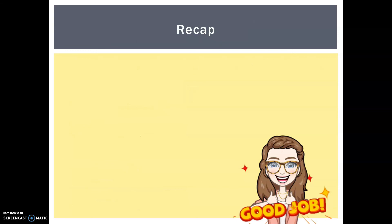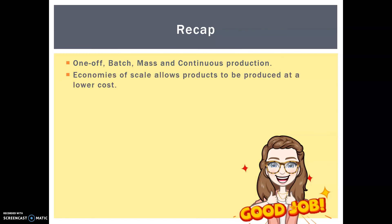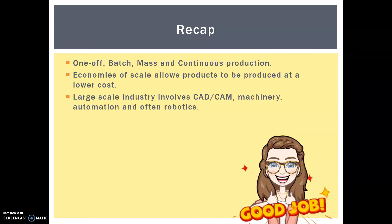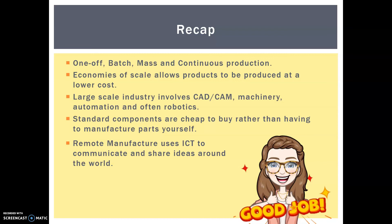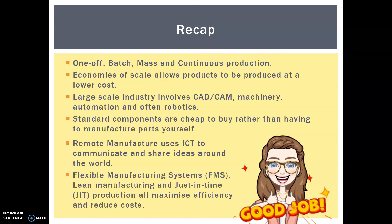Well done, guys — we got through. I know that was a video-heavy one, but hopefully they all gave you a really great insight to those production lines. So we learned about one-off, batch, mass, and continuous production. We learned about economies of scale, which allows products to be produced at a lower cost. Large-scale industry involves CAD-CAM, machinery, automation, and often robotics. Standard components are cheap to buy rather than manufacturing the parts yourself, and manufacturers do that all the time. Remote manufacture uses ICT to communicate and share ideas around the world. And flexible manufacturing systems, lean manufacturing, and just-in-time production all maximize efficiency and reduce costs.